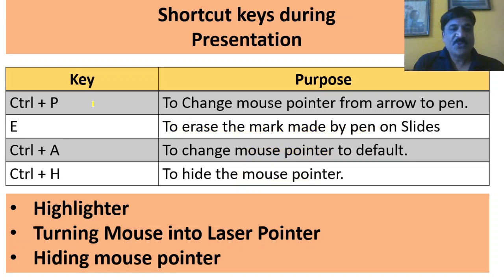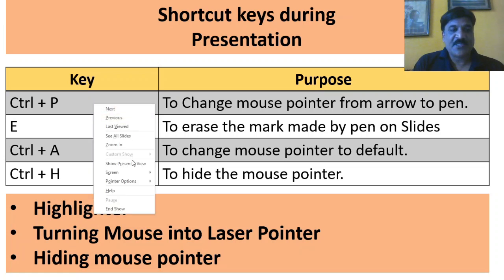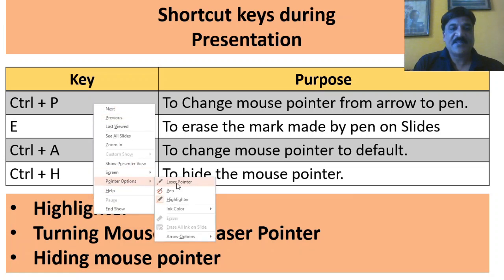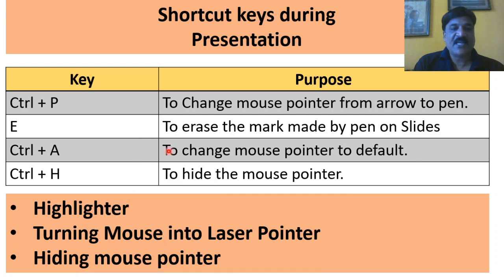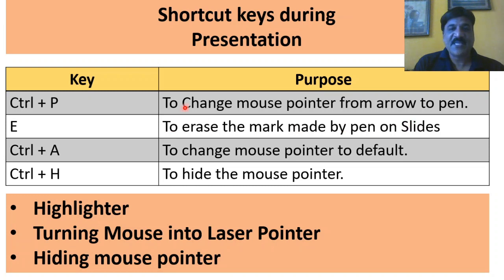Then, how to turn your mouse pointer into the laser pointer — simply select laser pointer and now you can highlight any points.